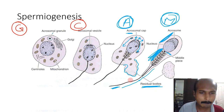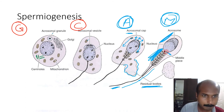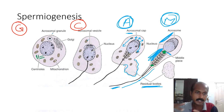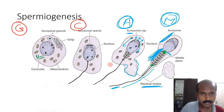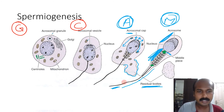The two centrioles are arranged as a proximal centriole and a distal centriole. The proximal centriole gives rise to the axonemal complex. The distal centriole gives off an outer dense fibrous sheath forming the principal piece. The end piece contains only the axonemal complex without the fibrous sheath.